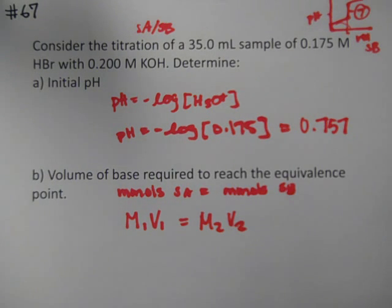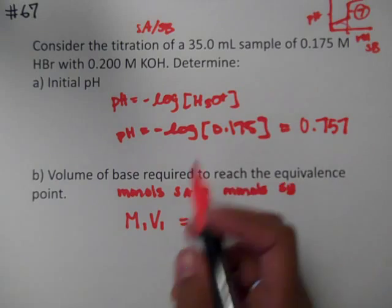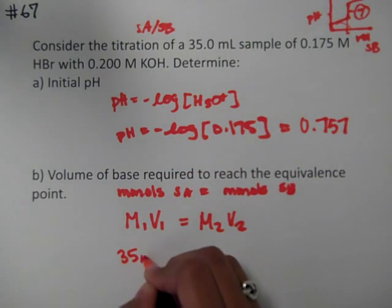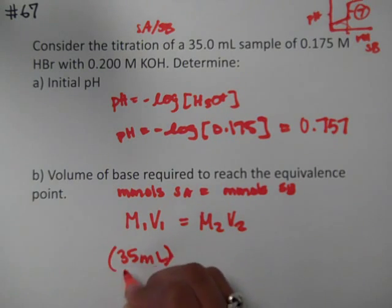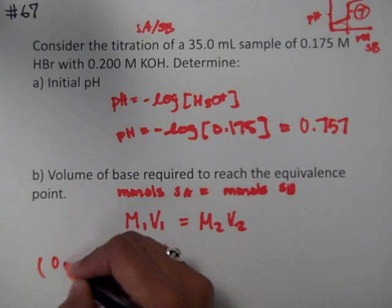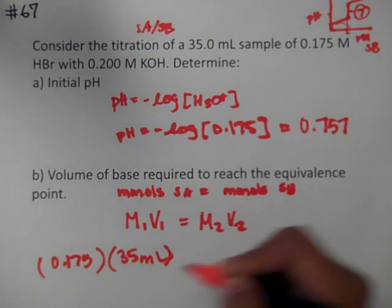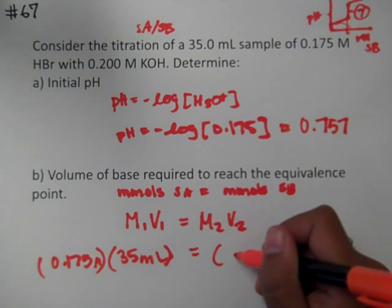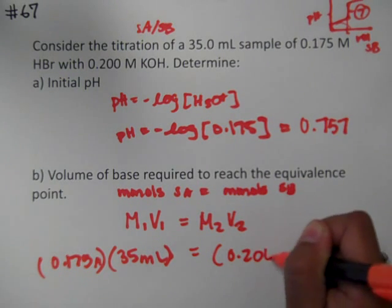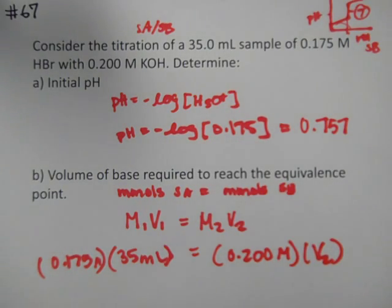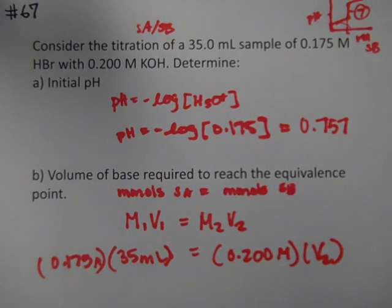Now what is our M1V1? We're going to do the acid side because that's what we have both of. So we have 35 milliliters as our V1. M1 is going to be 0.175 molarity. And we can put in milliliters, and we're going to put in another molarity for the base and our V2. Remember we can keep it in milliliters and millimoles—that's easier to work with.